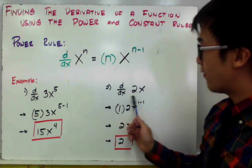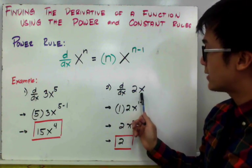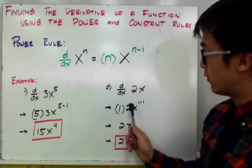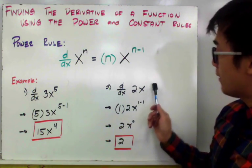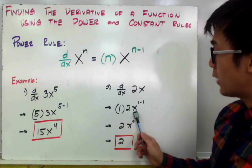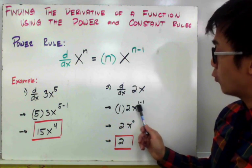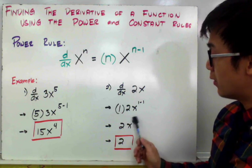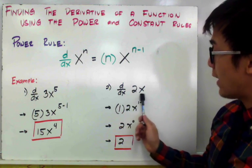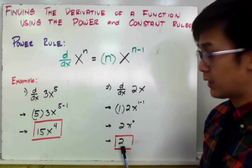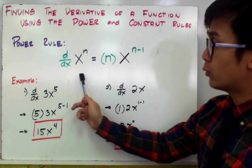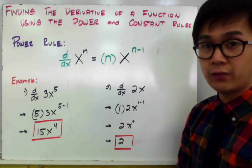For example number 2, we have another polynomial which is 2x. If we're going to find the derivative of 2x in terms of x, we'll have the exponent of 1 times 2x raised to the 1 minus 1. And 1 minus 1 is equal to 0. Therefore, the derivative of 2x in terms of x is simply equal to 2, by using the power rule.